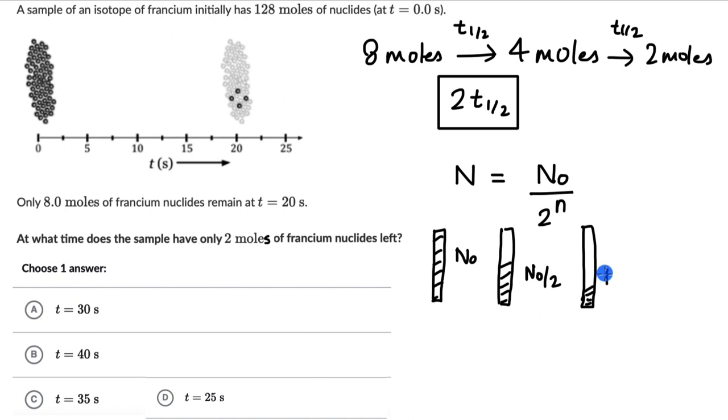So we can write 4 as 2 square. This is n0 by 2 square. After one more half life, we have n0 by 8 remaining. And we can write that as n0 divided by 2 to the power 3 which is 8. So you see what is happening.